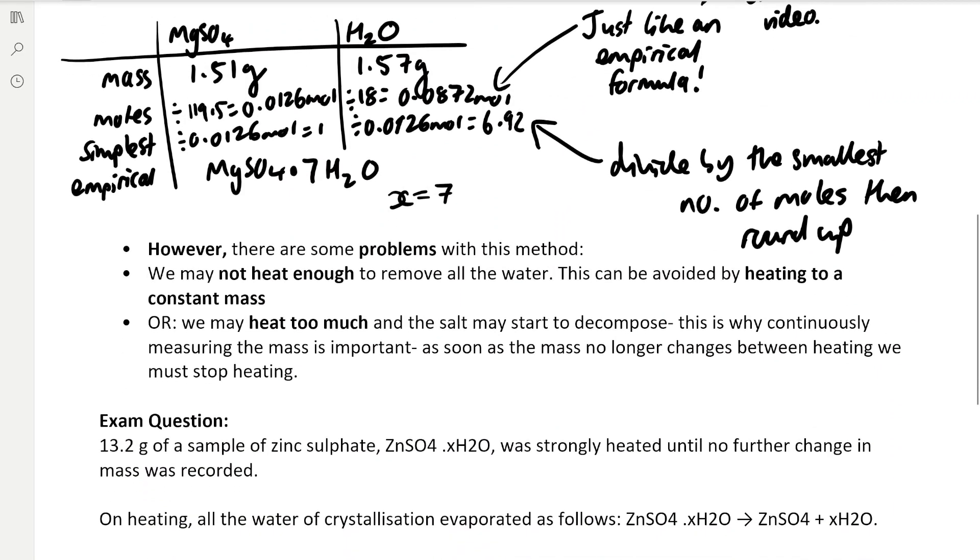However, there are some problems with this method of finding the waters of crystallisation, because we may not heat the salt enough to remove all the water. We can avoid this by heating to a constant mass, which means that when you heat the salt, over time you continuously check the mass, and if the mass stops changing, you know you've removed all the waters of crystallisation.